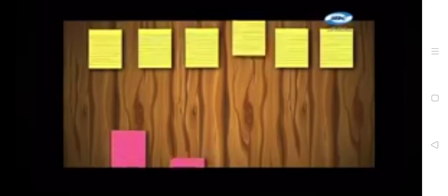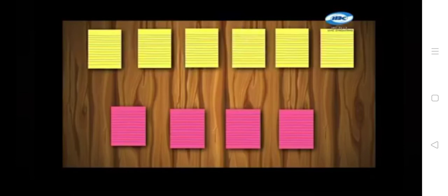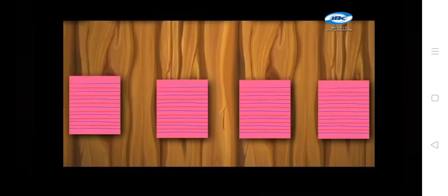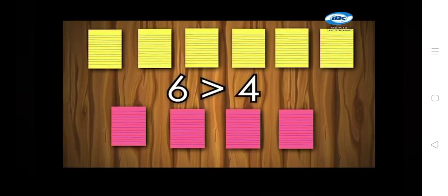I have here different colors of paper. Let us compare each. Number one: yellow and pink. We have six yellow papers and four pink papers. Which is greater? Yellow. We can say that six is greater than four. We will use the greater than symbol. The pointed part of the arrow is facing the smaller number.